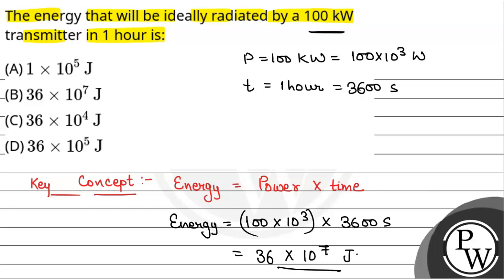So, this will be 36 into 10 to the power of 7 joule, which is option B. So, the correct option will be option B.